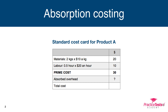Suppose we have the standard cost card for product A, made up as follows. We've got materials: two kilos at $10 a kilo is $20. Labour: half an hour at $20 an hour is $10. Add those two together and that gives us a prime cost of $30.